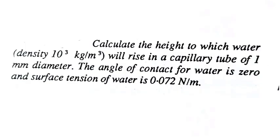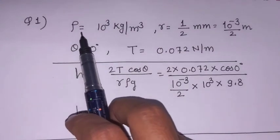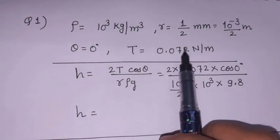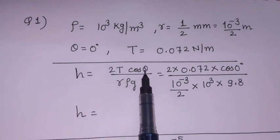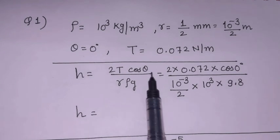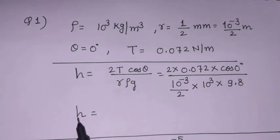Now for numerical problems. First: calculate the height to which water (density ρ = 10³ kg/m³) will rise in a capillary tube of 1 mm diameter. The radius r is half of 1 mm, the angle of contact θ = 0°, and surface tension of water is given. Using h = 2T cosθ / rρg, put in the values and calculate h.